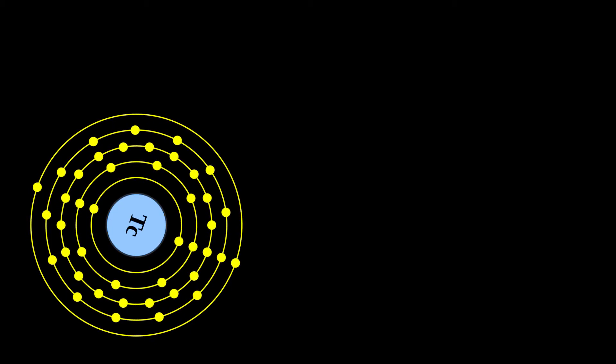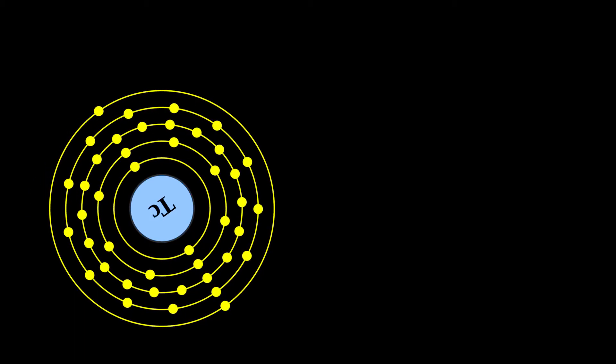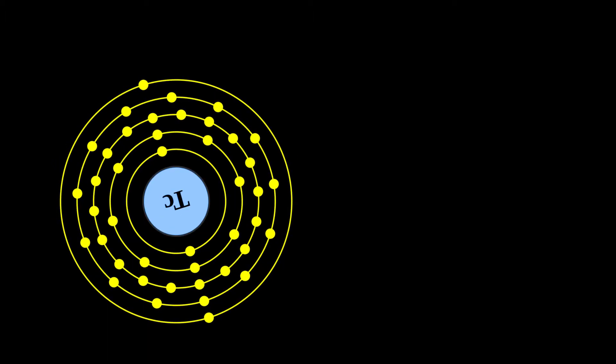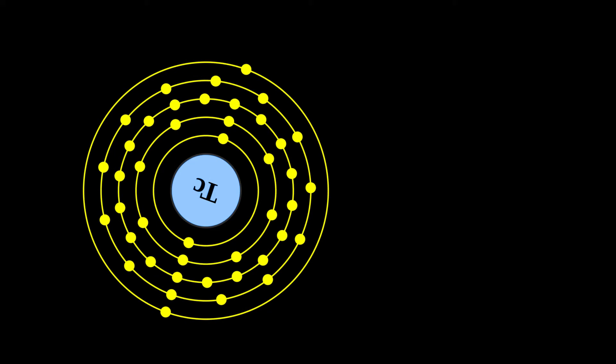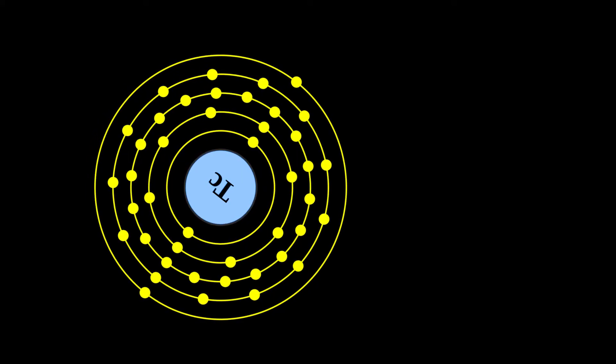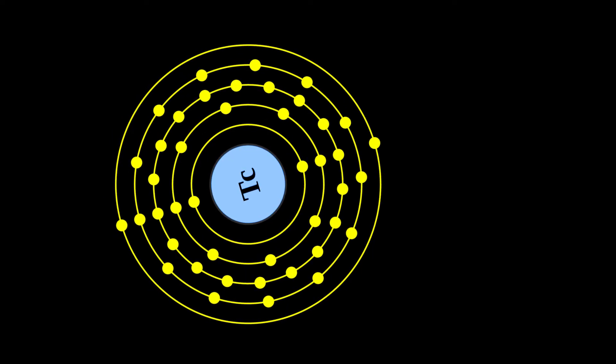The ground state of this nuclide, technetium-99, is used as a gamma ray-free source of beta particles. Long-lived technetium isotopes produced commercially are byproducts of the fission of uranium-235 in nuclear reactors and are extracted from nuclear fuel rods.